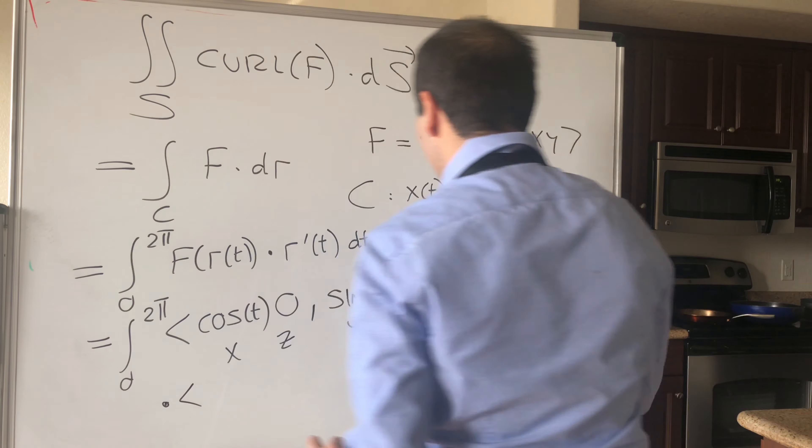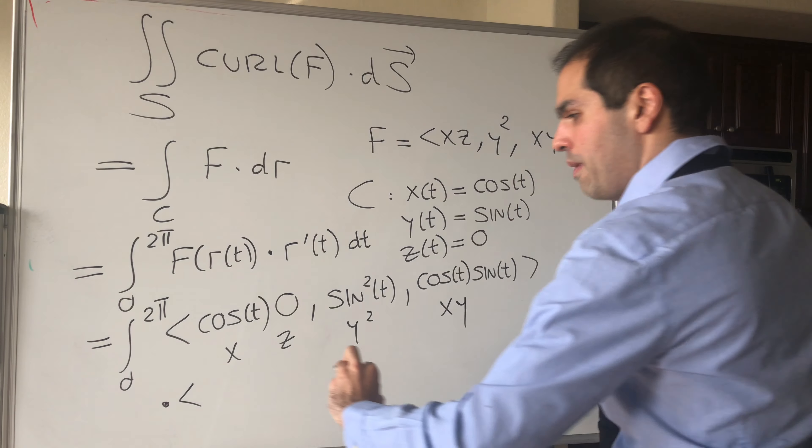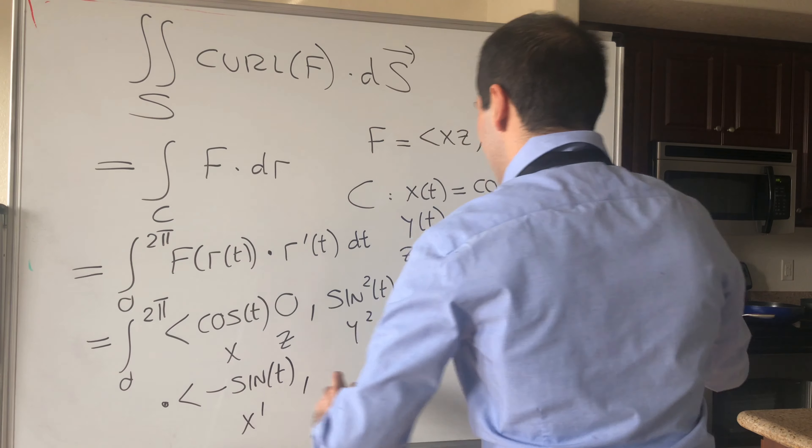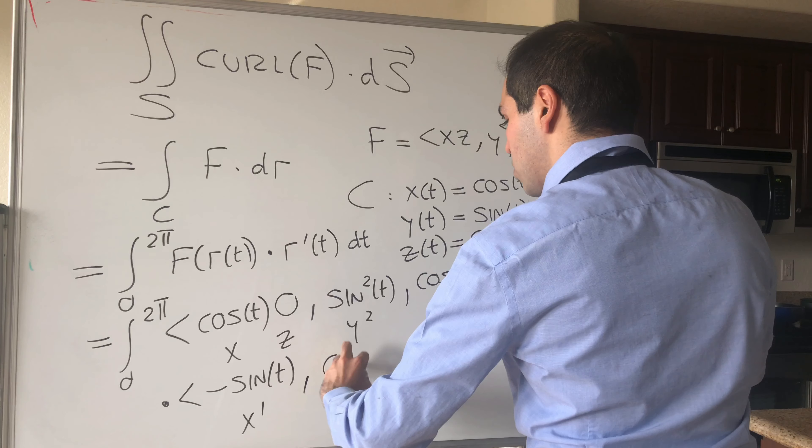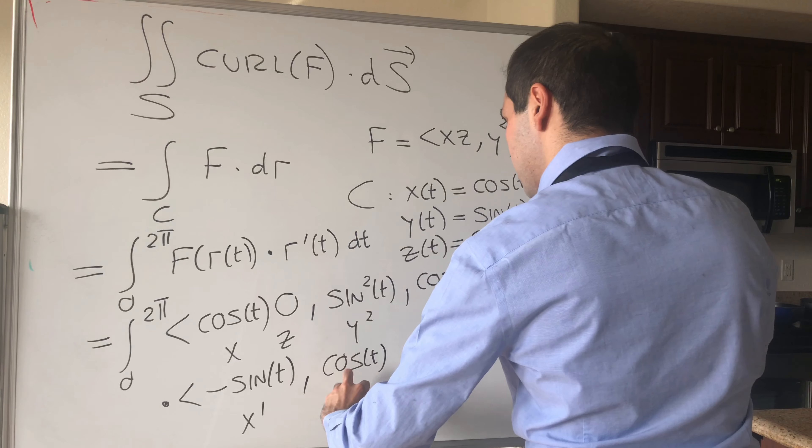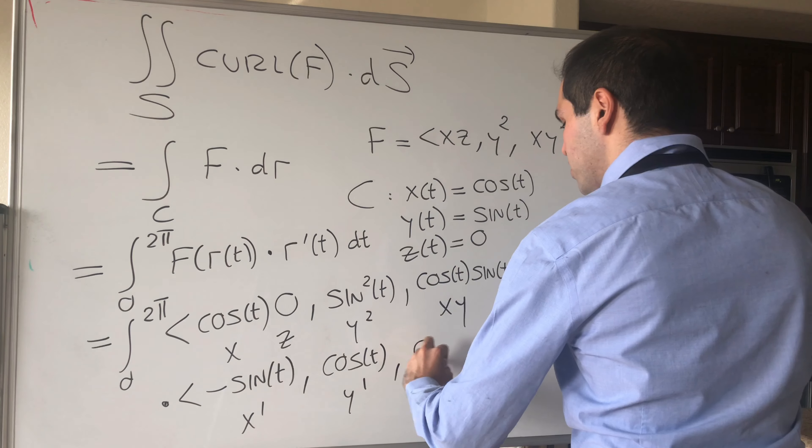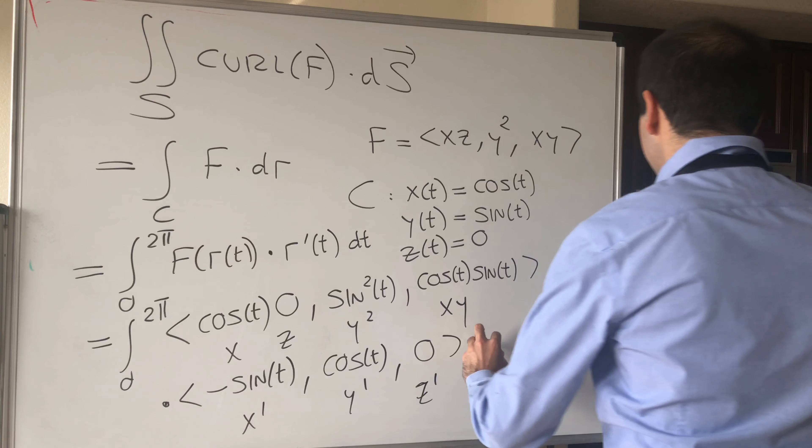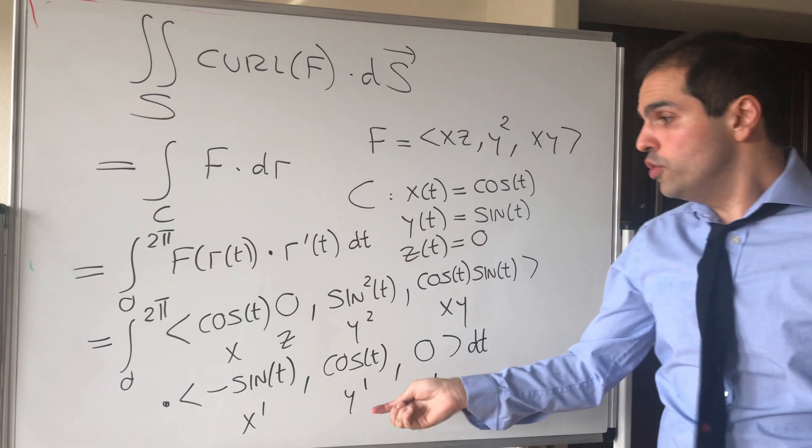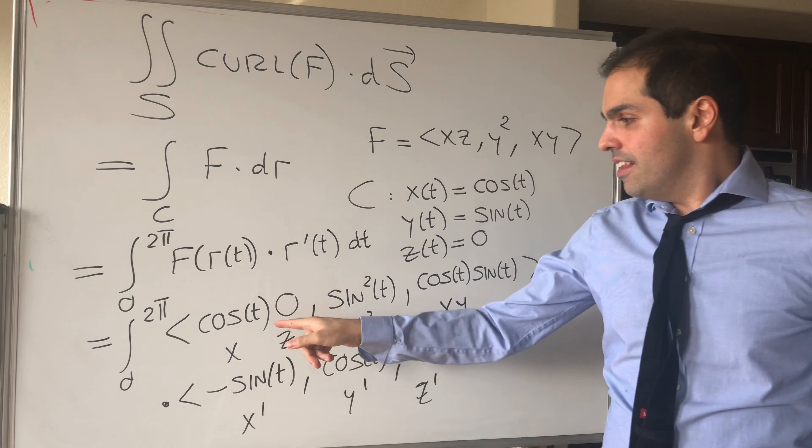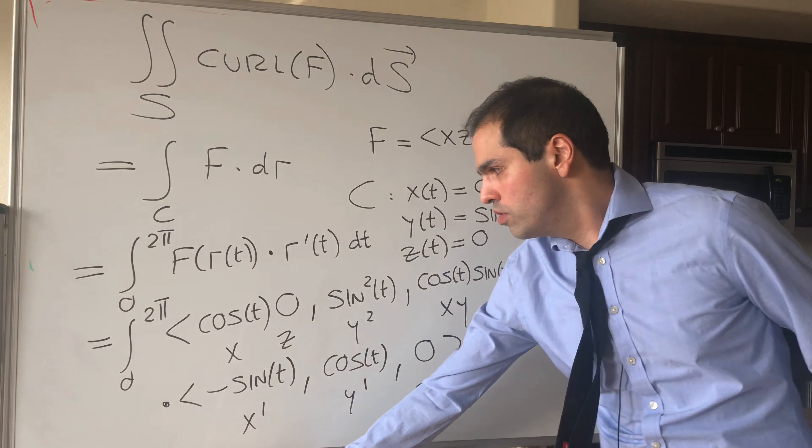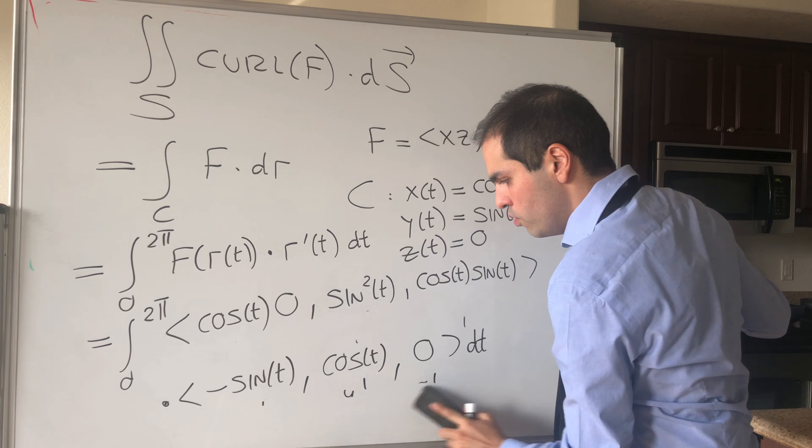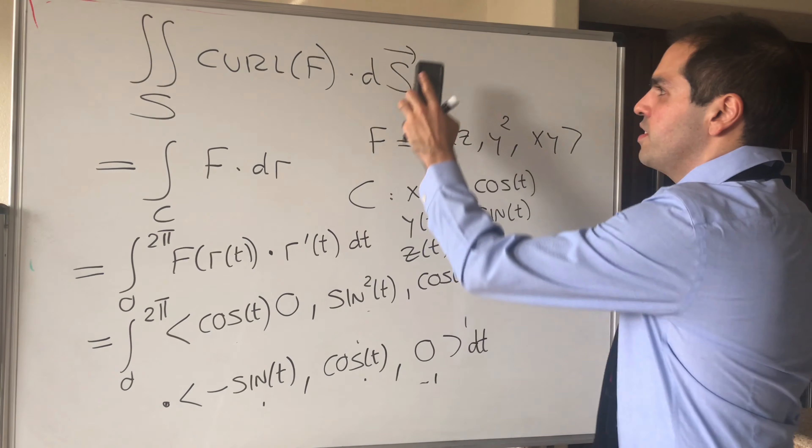And you dotted with the derivative of that. So, you dotted with cosine prime, which is minus sine. So that's x prime. And then, sine prime, which is cosine, y prime. And lastly, 0 prime, which is 0. So that's z prime, dt. And now, this looks like a huge mess, but the nice thing is when you dot those things, if you dot those two vectors, you actually get a bunch of 0s.